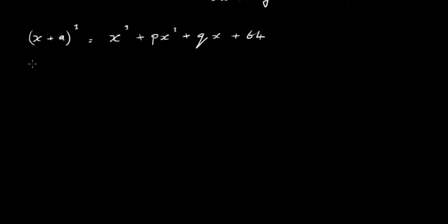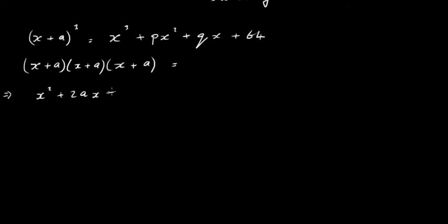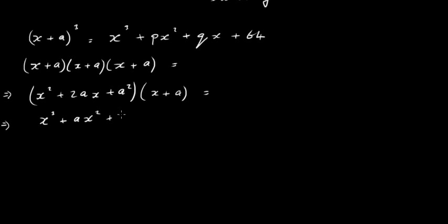So what we're going to do is multiply out the left-hand side. The left-hand side is x plus a, times x plus a, times x plus a. If we multiply the first two out, we get x squared plus 2ax plus a squared, and all of that is then multiplied by another x plus a. Expanding fully: x squared times x is x cubed, x squared times a is ax squared, 2ax times x is plus 2ax squared, 2ax times a is plus 2a squared x, a squared times x is a squared x, and a squared times a is a cubed.